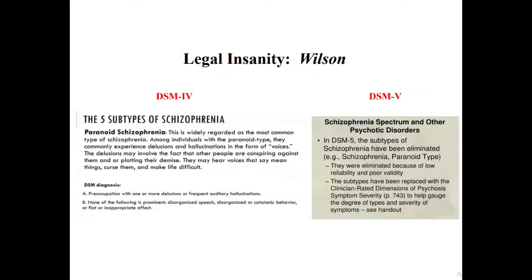In the Wilson case, the defendant has been diagnosed with paranoid schizophrenia. The DSM-4 and DSM-5 — the Diagnostic and Statistical Manual used by psychiatrists and psychologists to diagnose mental illness — describe the condition. The DSM-4 divided schizophrenia into subtypes, while DSM-5 collected all types into one diagnosis and created a spectrum. The defendant's diagnosis is relevant to understanding how his mental illness affected his perception of reality.